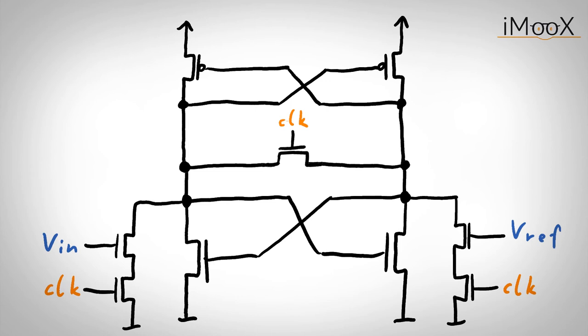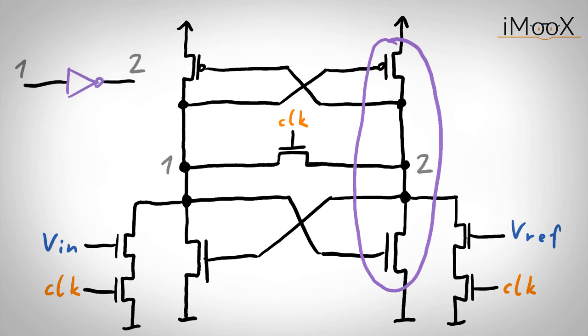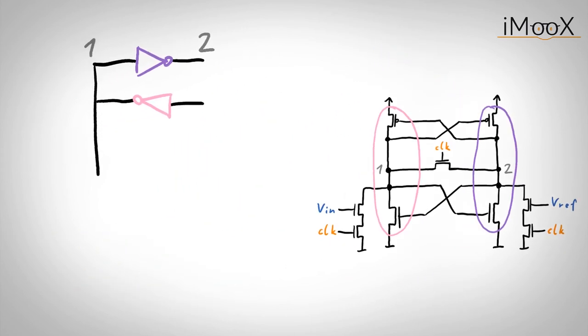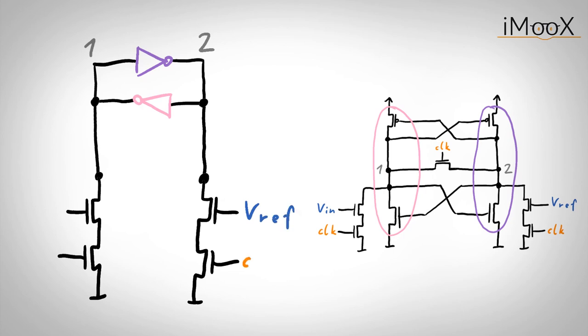Now let us try to redraw or to restructure some things. This PMOS-NMOS circuit looks like a CMOS inverter with input node 1 and output node 2. The same is true for the other branch with inverted input and output nodes. What we get is simply two inverters that are connected as a D-Latch with some additional clock and reset circuitry.